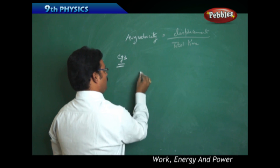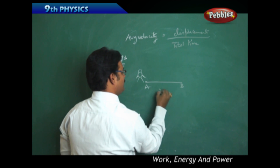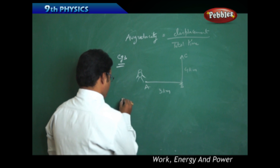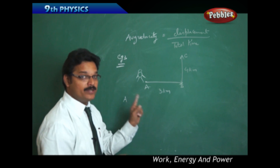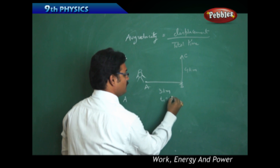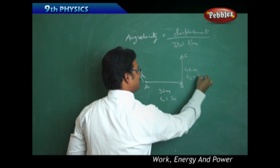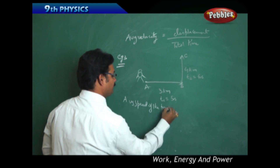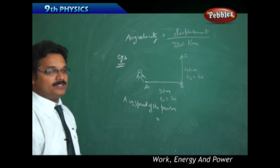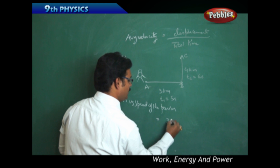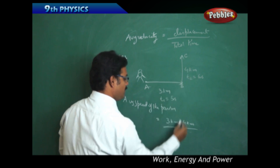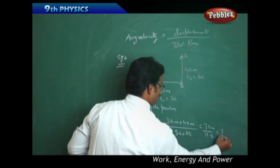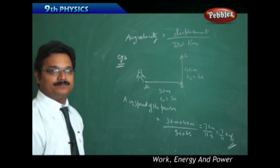Example: a person travels from A to B, a distance of 3 kilometers, and from B to C towards north, a distance of 4 kilometers. The time taken from A to B is t1 equals 5 seconds, and from B to C is t2 equals 6 seconds. Average speed is total distance divided by total time: 3 km plus 4 km divided by 5 plus 6 seconds, giving 7 km by 11 seconds, or 7 by 11 kilometers per second.